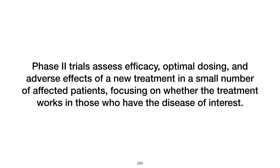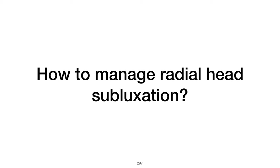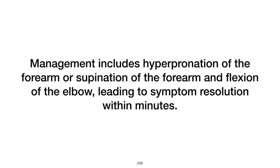How to manage radial head subluxation? Radial head subluxation, often referred to as nursemaid's elbow, can be managed through manual reduction techniques such as hyperpronation of the forearm or supination of the forearm and flexion of the elbow. These maneuvers often result in symptom resolution within minutes.